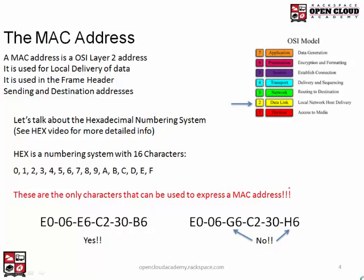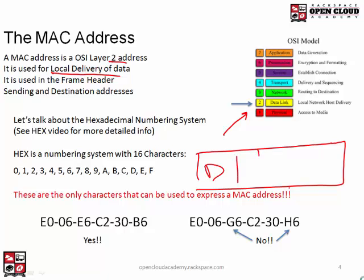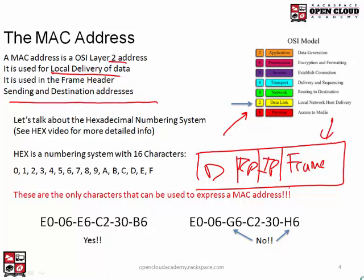The MAC address is a layer 2 address used for local delivery of data — local network host delivery. That's the responsibility of the MAC address. It is used in the frame header. If we think about a piece of data, we have the data itself, the TCP header, the IP header, and then the frame header. In the frame header is where we are going to have our sending and destination MAC addresses, which is why it's a layer 2 address.